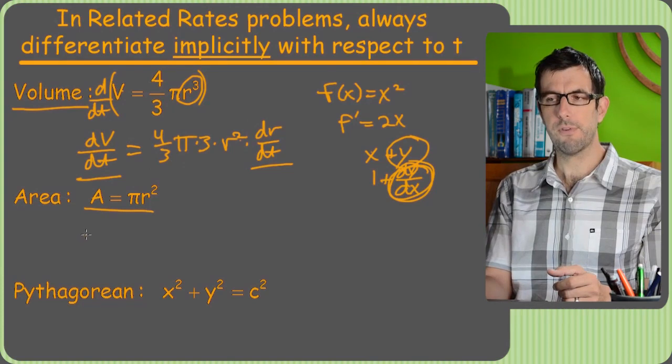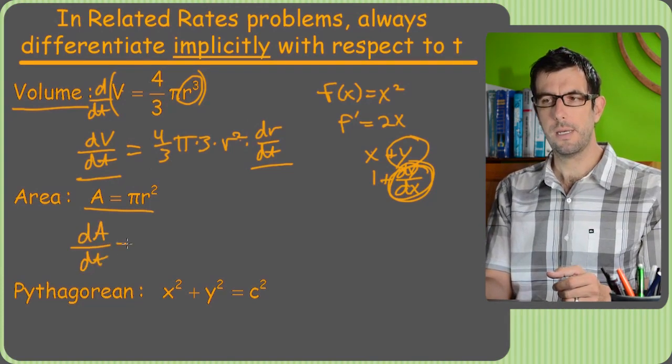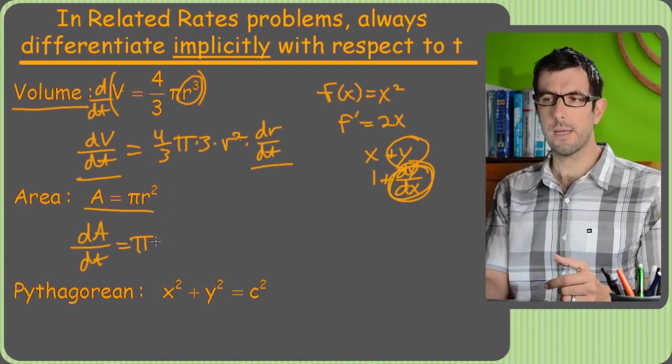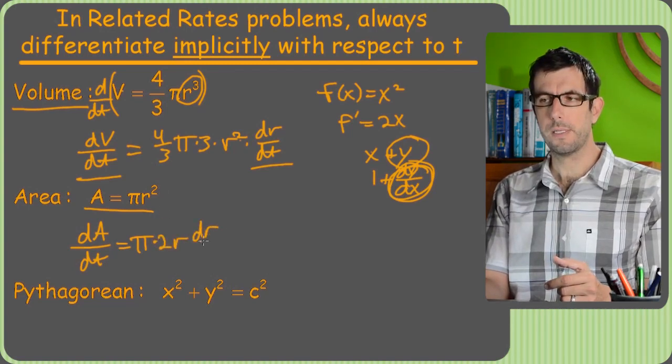So now let's do this one. Derivative of area is just dA/dt. And then, derivative of r squared, just like last time, is going to be 2r dr/dt.